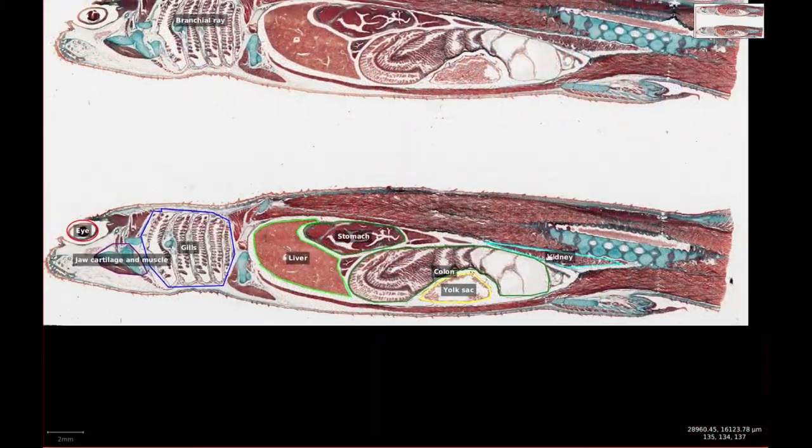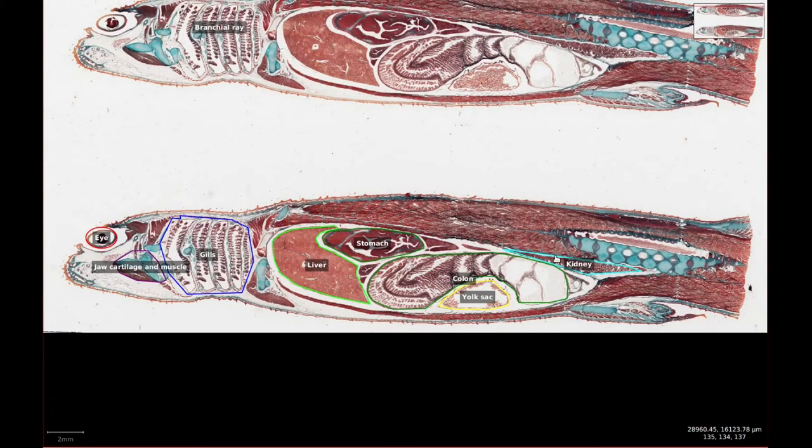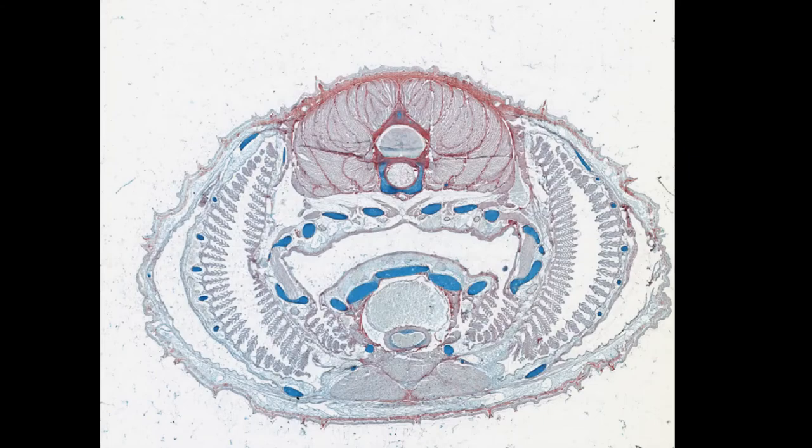So those are all the longitudinal sections and the organs you can see in each one. The transverse sections are much simpler, since slides 246 and 247 are from very similar regions but have different stains.